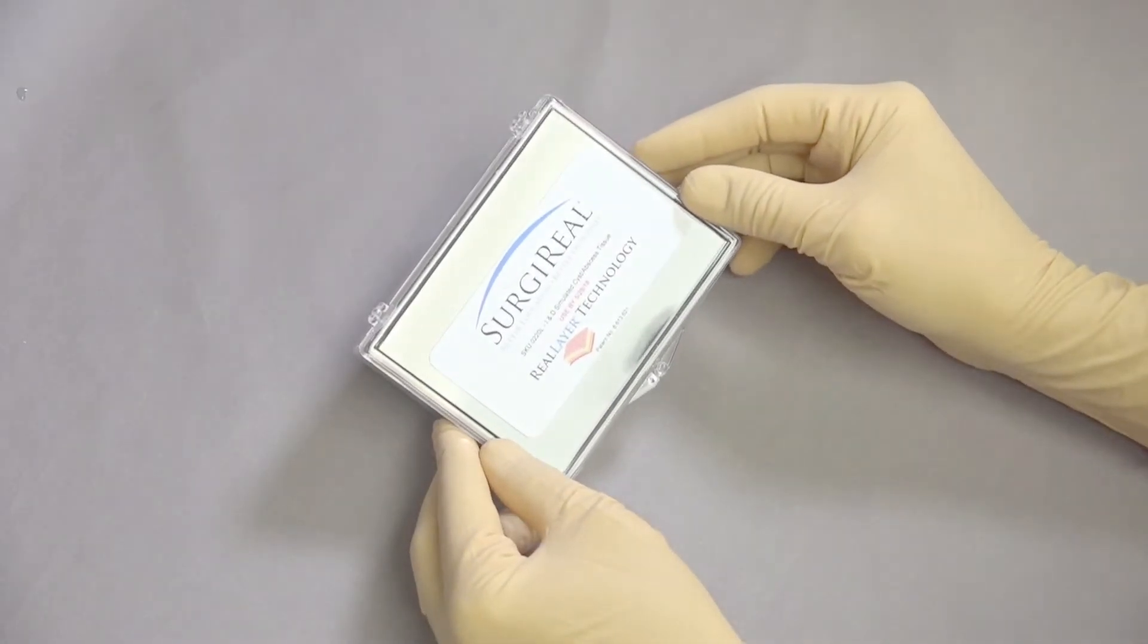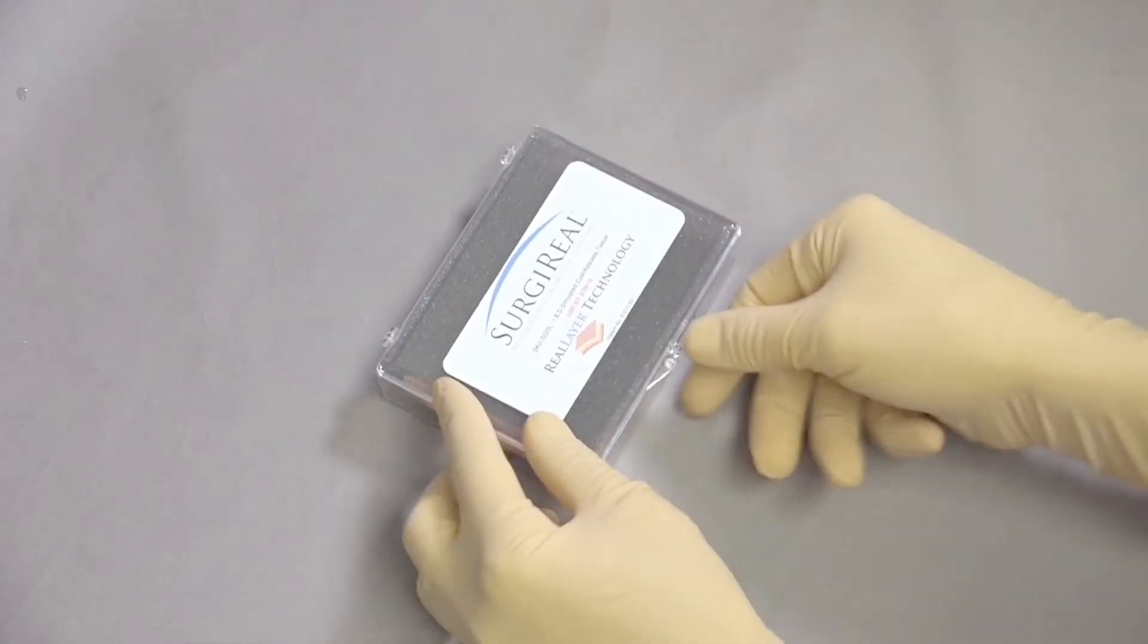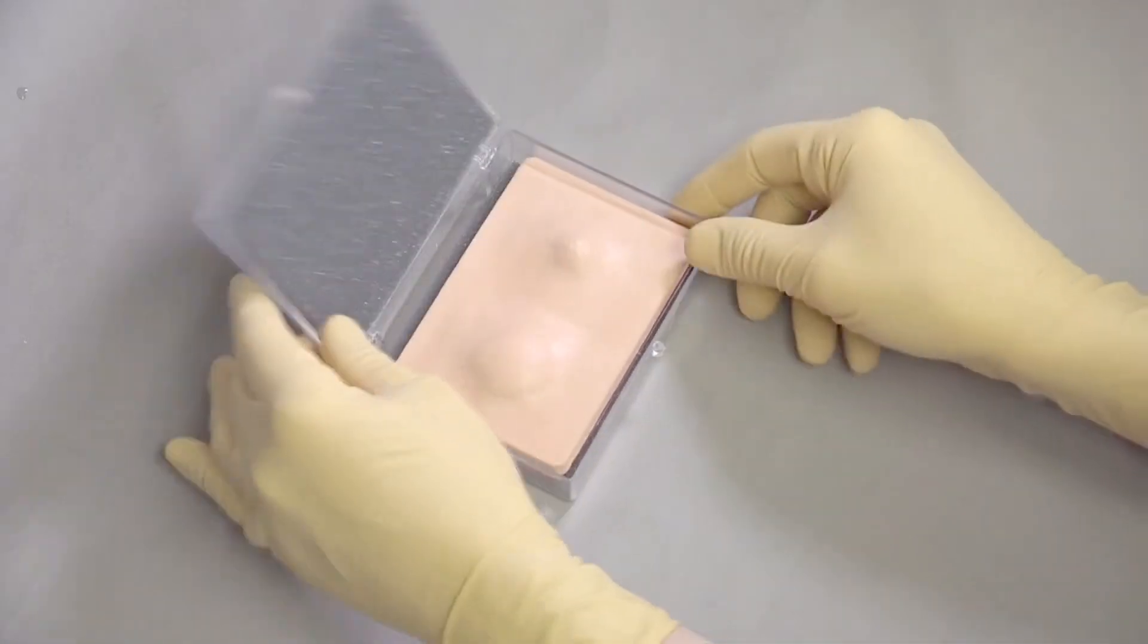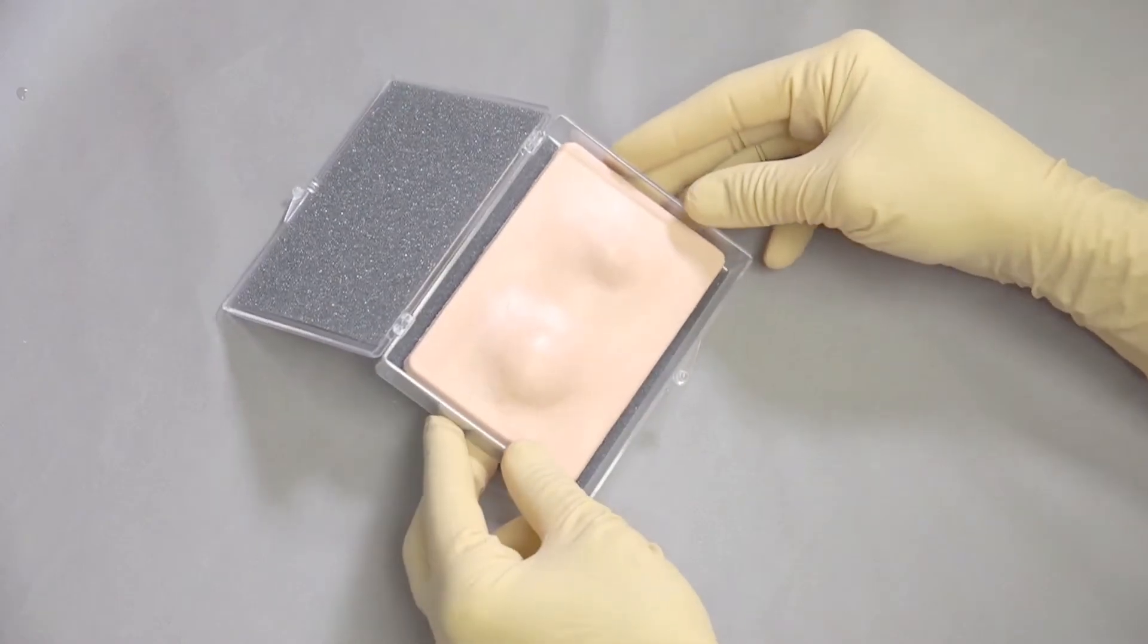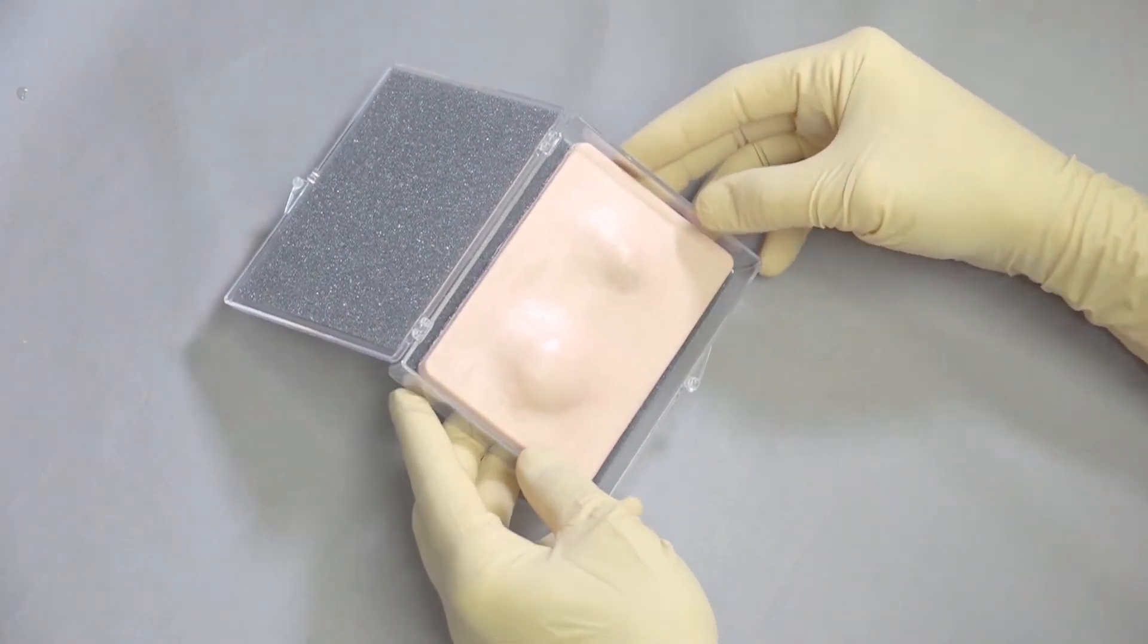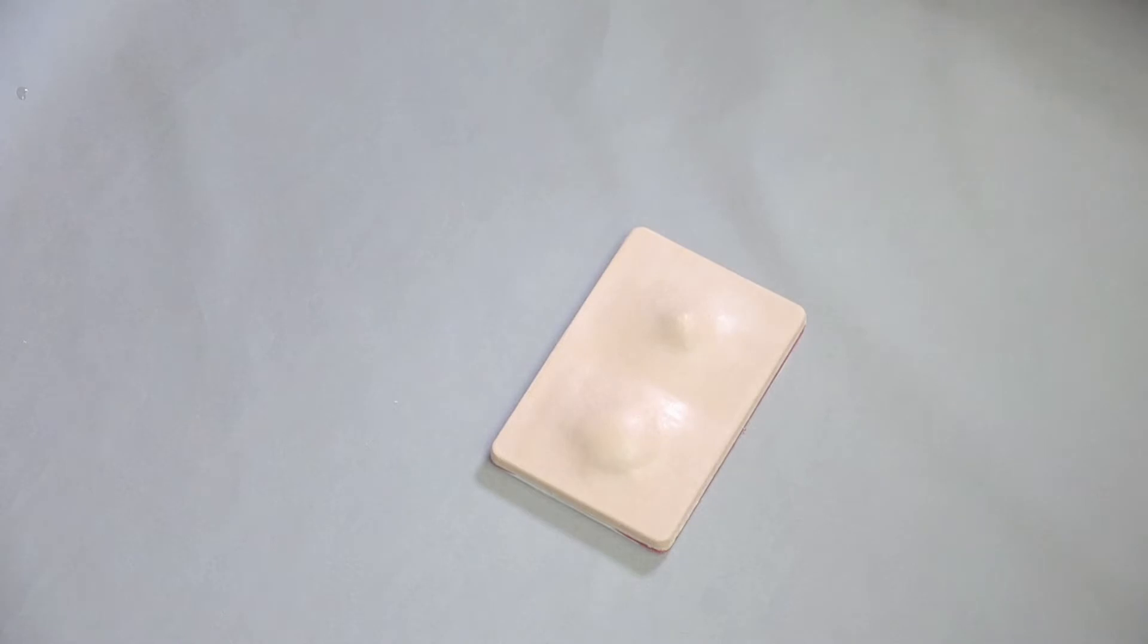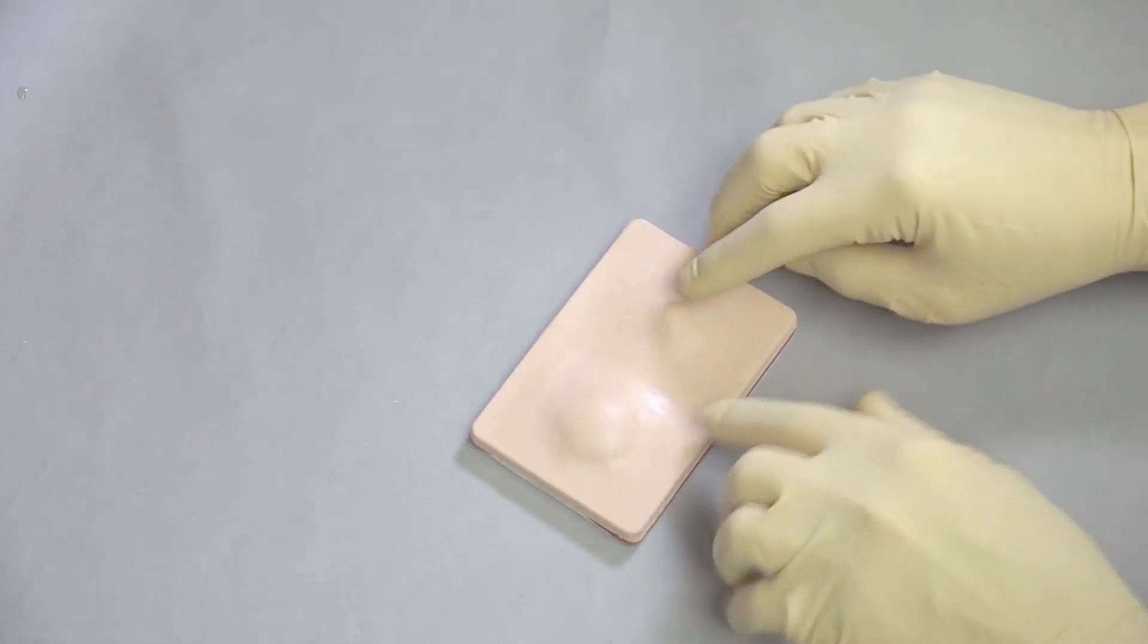This is the SurgeryRule Incision and Drainage Simulated Cyst and Abscess Tissue Pad. This is designed to simulate an abscess and a cyst to allow drainage and then removal of the cyst. It can be removed from the packaging and then you can palpate.